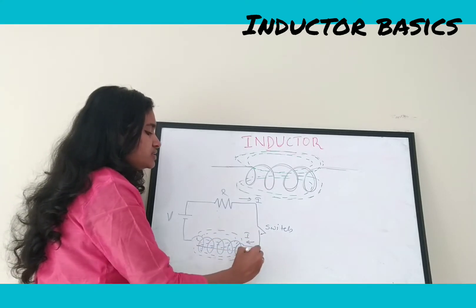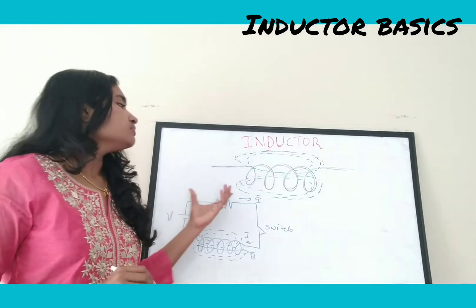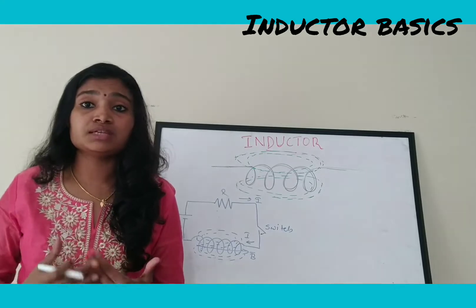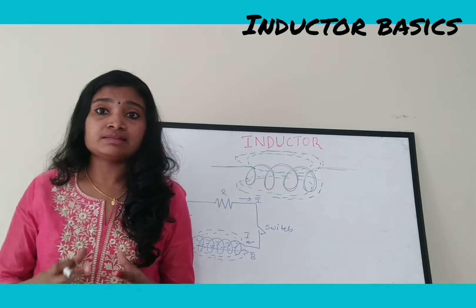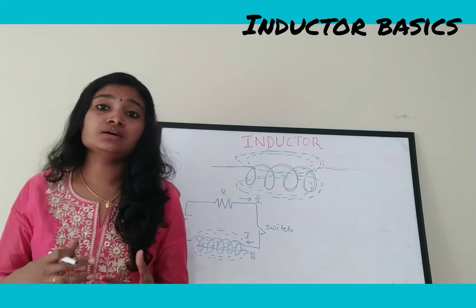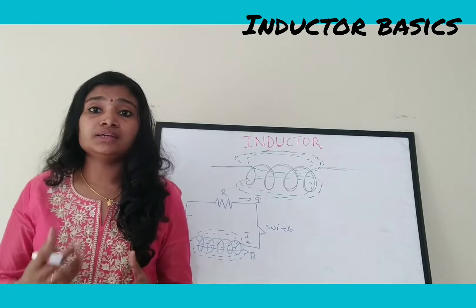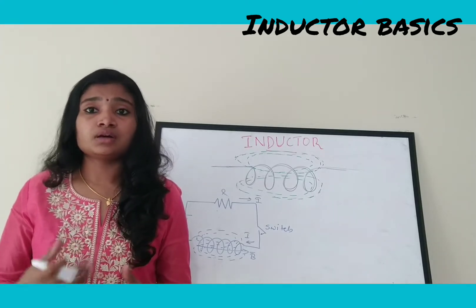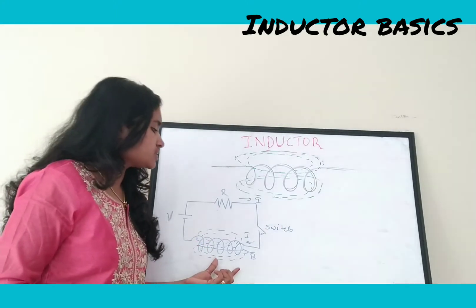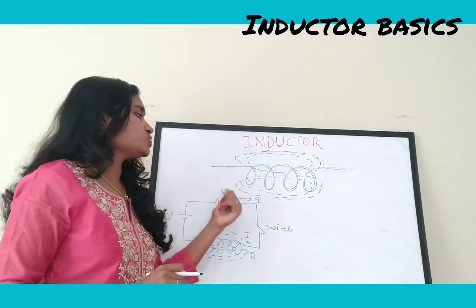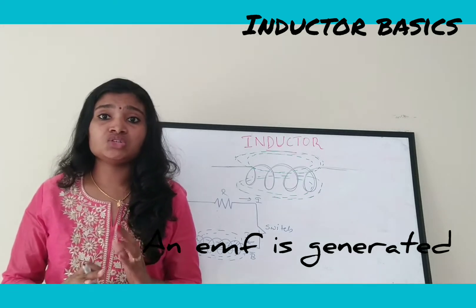The magnetic field is denoted as B. When a time-varying current flows through the inductor, a magnetic field is generated. The inductor does not want this magnetic field to change — as the current increases, the magnetic field density also increases. The inductor tries to oppose this change in current by generating an electromotive force, or EMF, opposing the change.